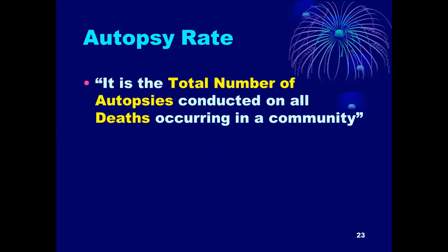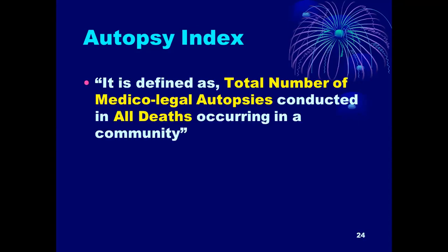Autopsy rate is defined as the total number of autopsies conducted on all deaths occurring in a community during a specific time period — that is, out of the total number of deaths, how many autopsies were conducted. Autopsy index is defined as the total number of medical legal autopsies conducted on all deaths occurring in a community.